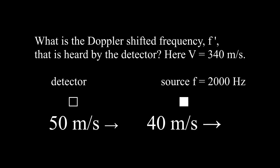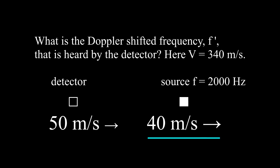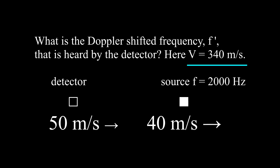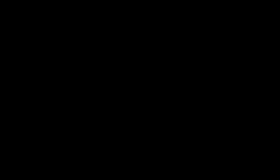The source emits frequency f equal to 2000 hertz and it is moving at 40 meters per second away from the detector. The detector is moving toward the source at 50 meters per second. At this moment the speed of sound is 340 meters per second. What is the Doppler shifted frequency f prime heard by the listener? We write the Doppler equation and then fill in the numbers, leaving the plus and minus signs to choose in a moment.